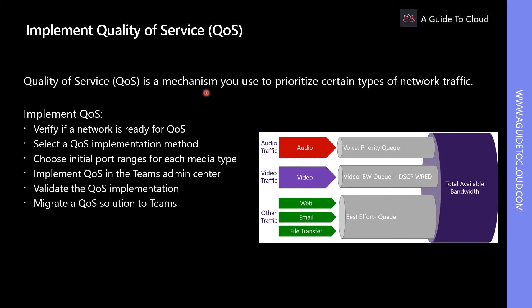Quality of Service, or QoS, is a mechanism you use to prioritize certain types of network traffic. QoS allows real-time network traffic like voice or video streams, which are sensitive to network delays, to cut in line ahead of traffic that is less sensitive, like downloading a new app where an extra second to download is negligible. QoS identifies and marks all packets in real-time streams using Windows Group Policy objects and a routing feature called Port-Based Access Control List. In most cases, the implementation of QoS is considered either during the planning and assessment phase or during the deployment of Microsoft Teams voice communication.